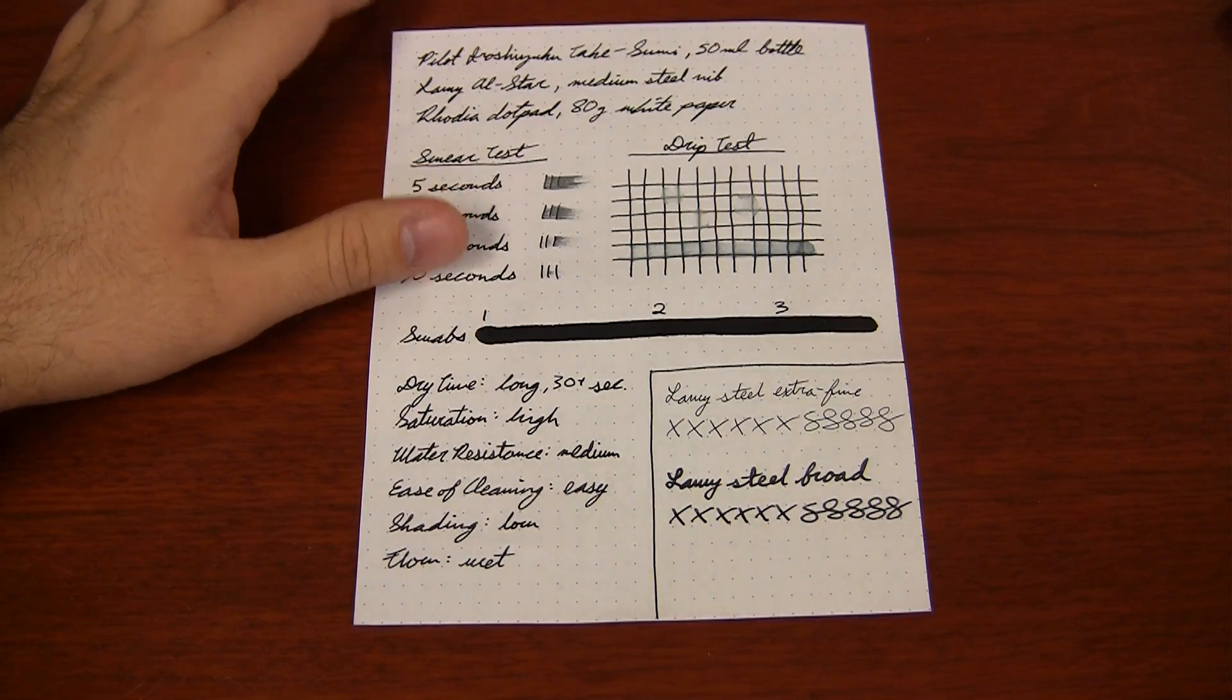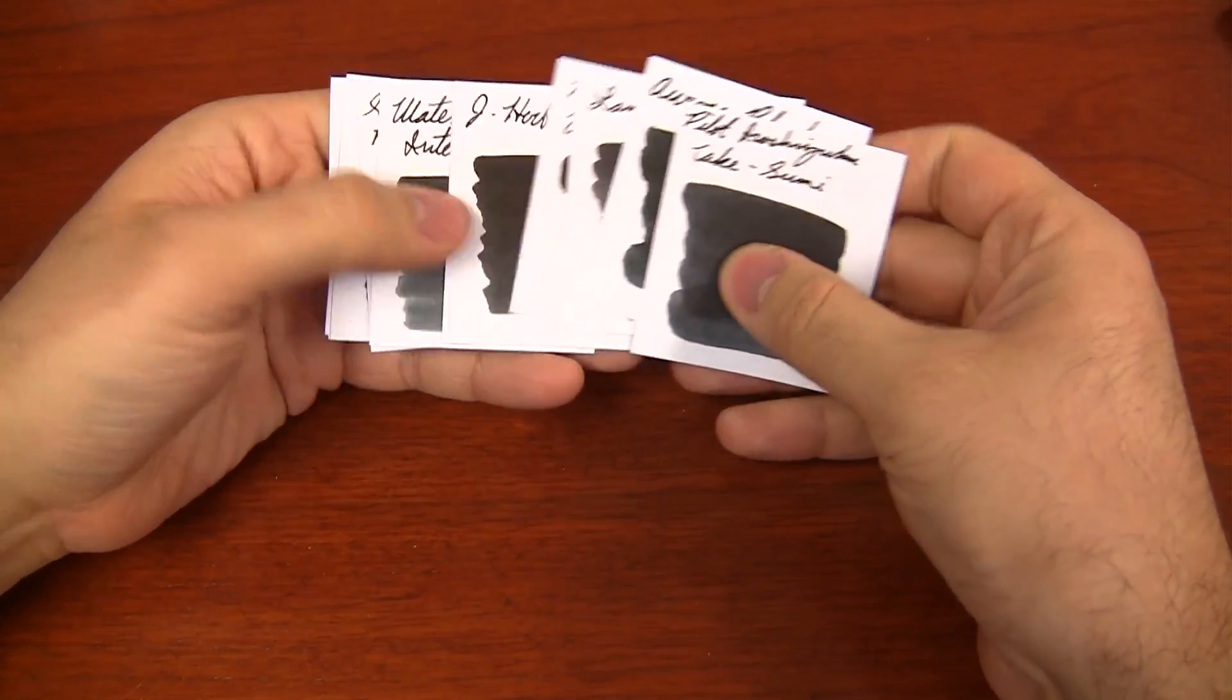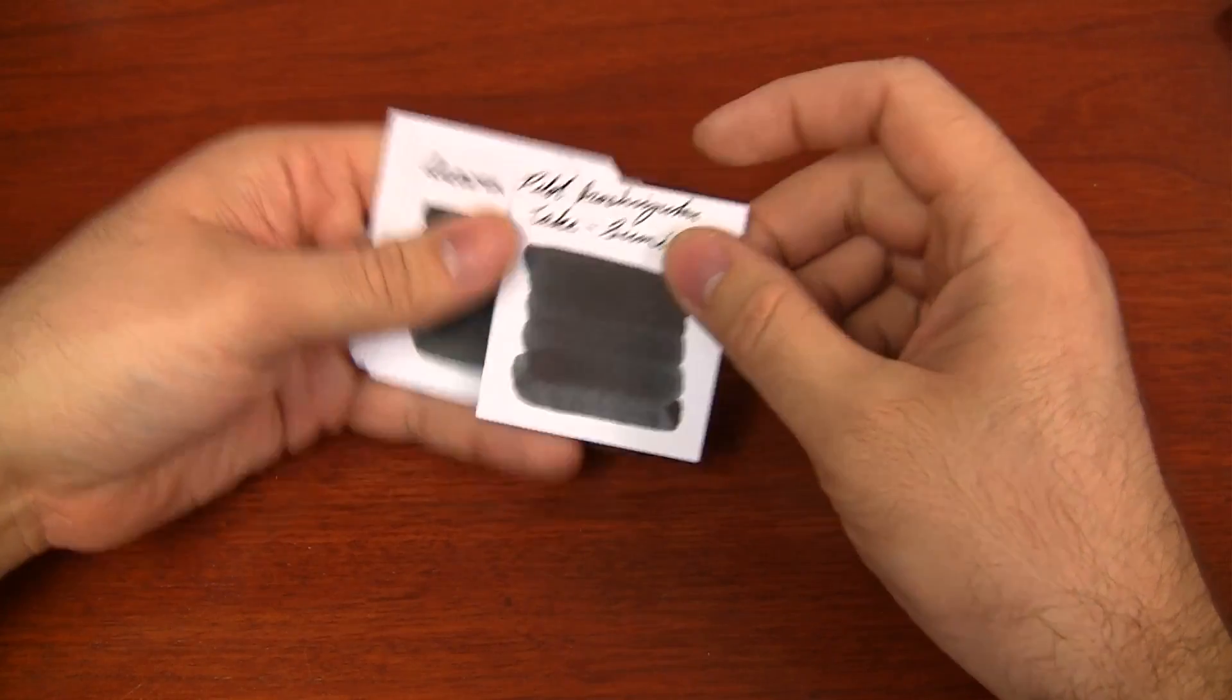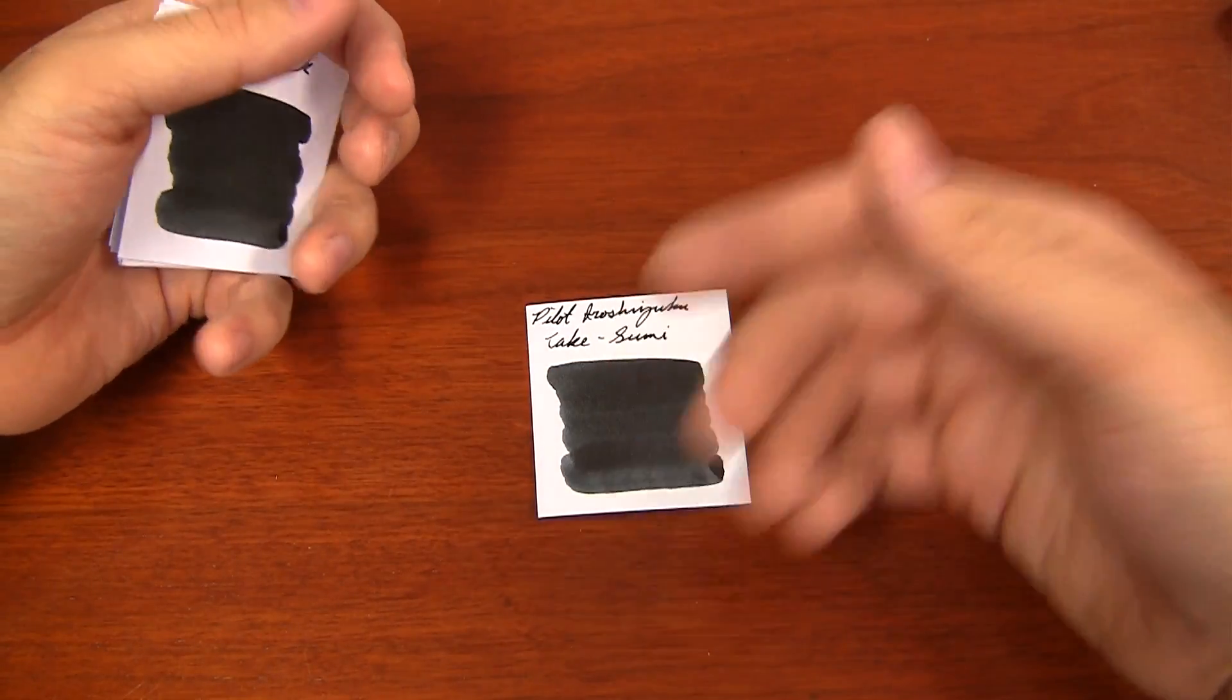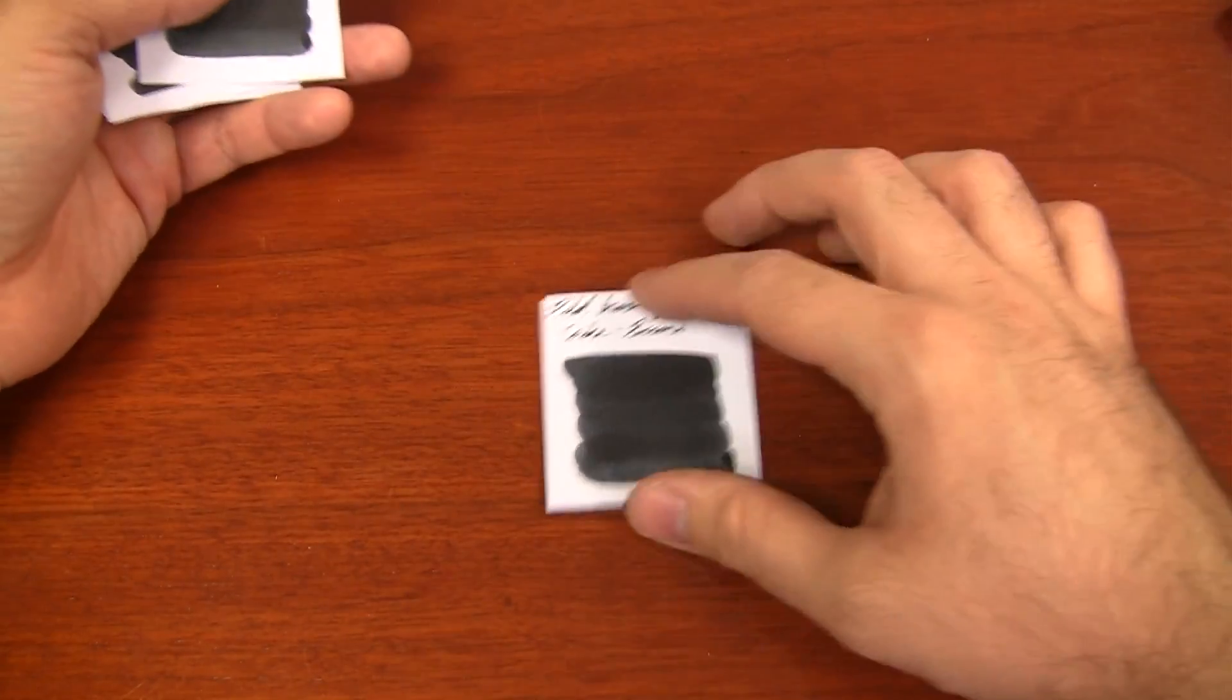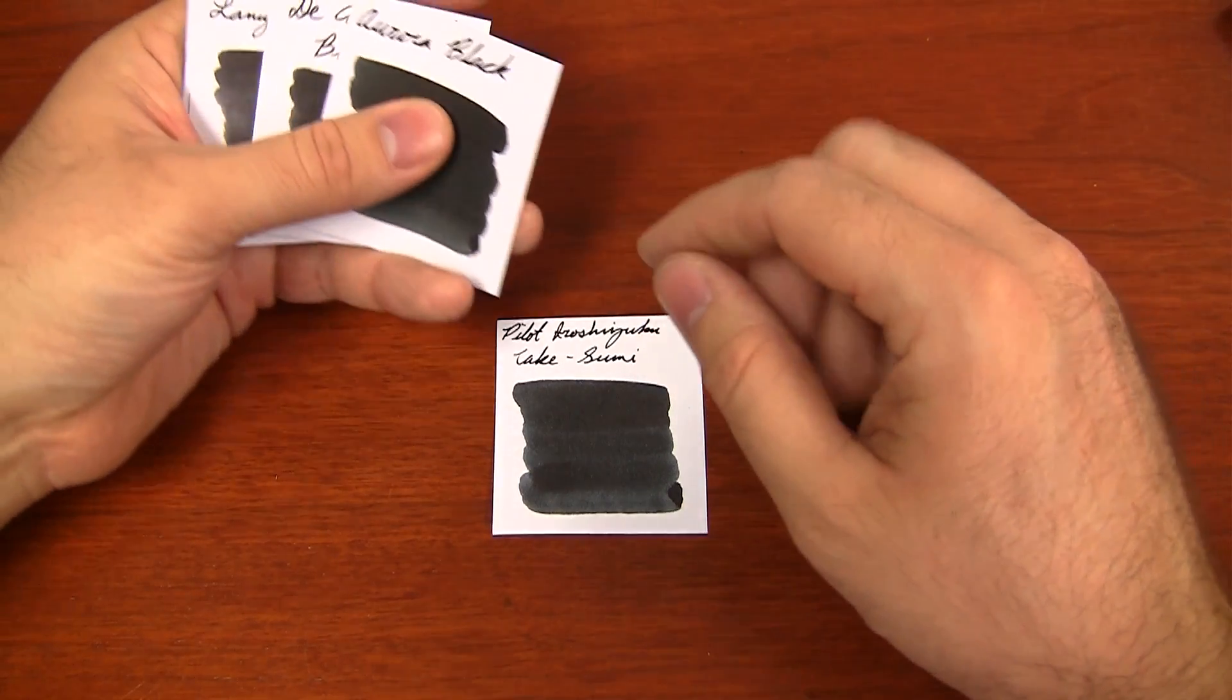I do have some other inks to compare it to. Got my good old swabs here. Lots of blacks to choose from. I really kind of got nitpicking and chose some of the closest ones or some of the most popular names of black inks so that I could give you an idea of what you could be in for with Takesumi. I will say, the Takesumi swab on this paper didn't look as dark as the writing does or the swab on the Rhodia paper. This is Clairefontaine Pollen cardstock that I use. I do all my swabs on this. Every now and then I run into an ink that it just looks a little washed out. So it looks a little washed out in the swab here, but the writing is where it really shines more.